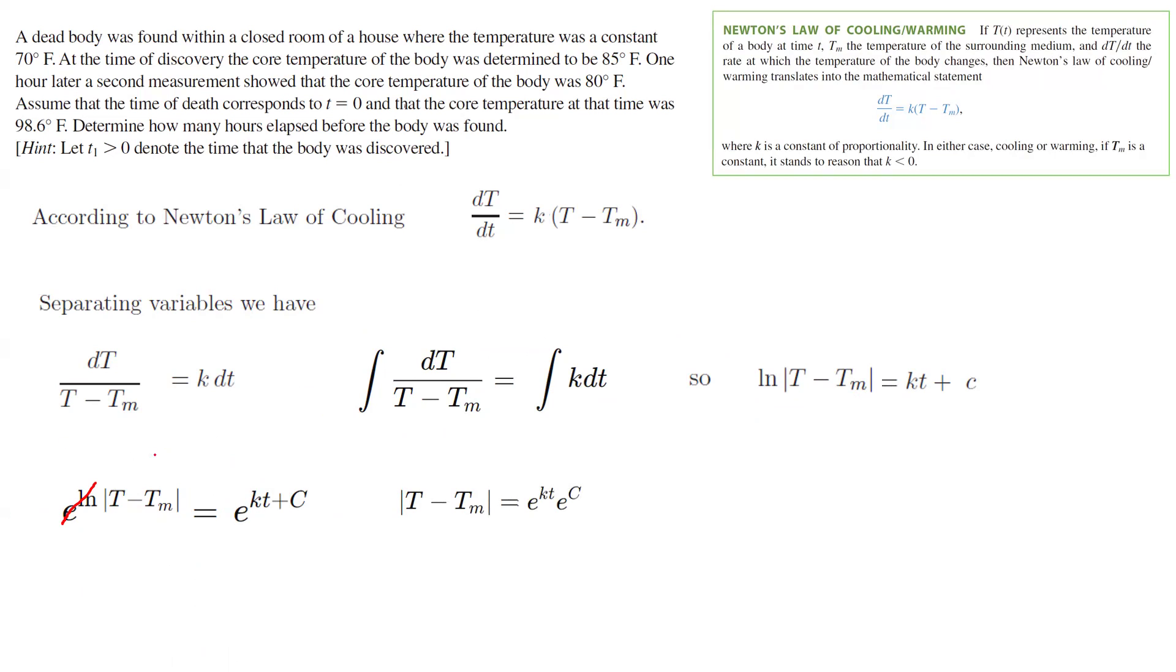Well, the absolute value gives you plus minus sign on the other side. You can write this as absolute value of T minus Tm equals C e to power Kt. And plus minus C is basically can be written as C sub 1. So C sub 1 is nothing but plus minus C. So basically, T minus Tm is equal to plus minus C e to power Kt. And then bring Tm to the other side and rename plus minus C, C1. And then you have T equals Tm plus C1 e to power Kt.